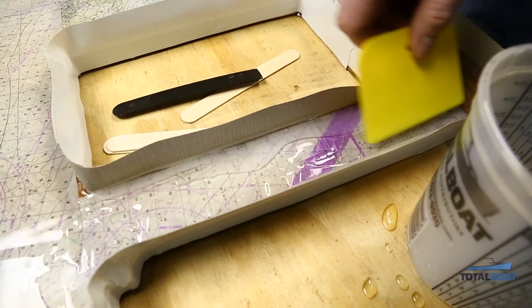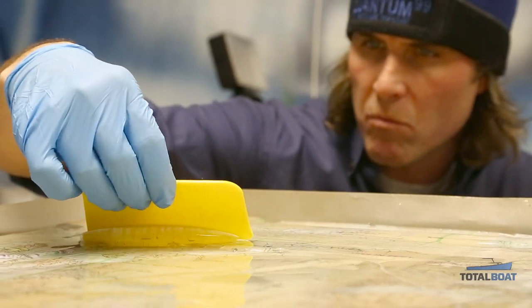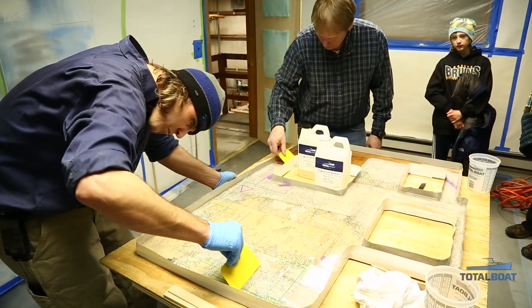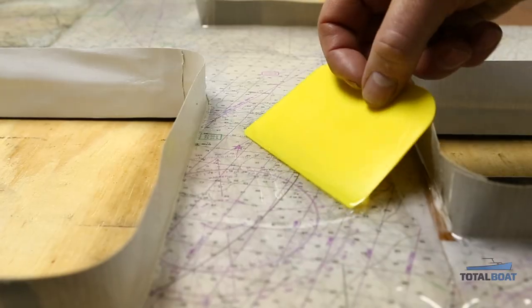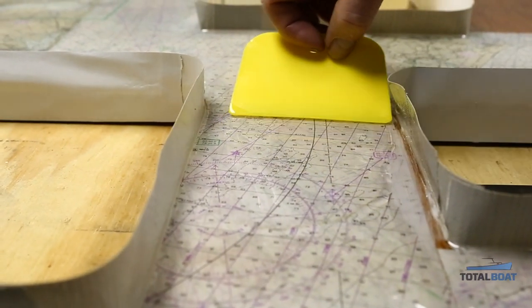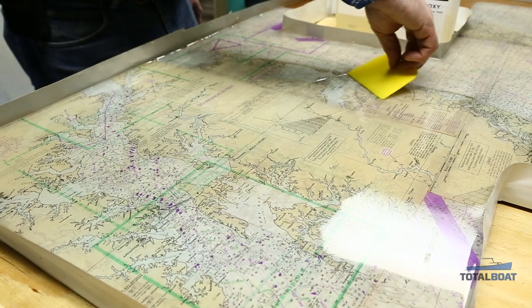We'll get it into all of the crevices and dry spots and wet out all the areas. It's really important to use the light and the reflection to find any spots that are not wet or uneven, or any spots where there are bubbles.